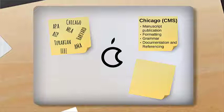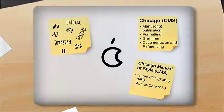This tutorial will focus on one of the two CMS documentation styles, the Notes Bibliography System, or NB style, which is commonly used in literature, history, and arts courses.